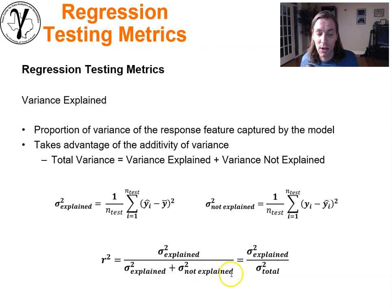If we put them together, the r-squared is the variance explained over the variance explained plus the variance not explained, which is the variance explained over the total variance. It's a ratio between zero and one of how much of the variance is being captured by your model. Pretty useful stuff.